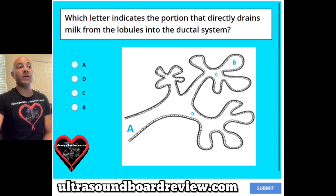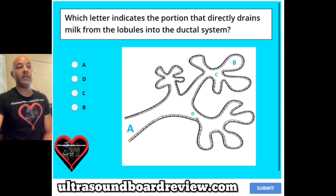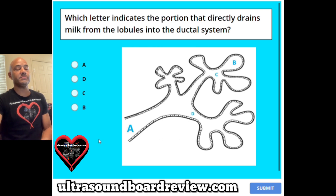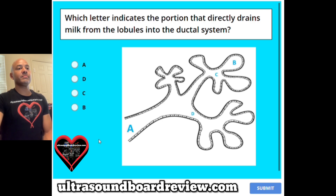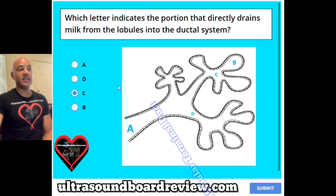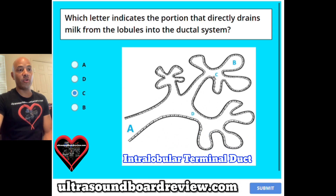Question 11. Which letter indicates the portion that directly drains milk from the lobules into the ductal system? A, B, C, or D? The answer is C, this area right here.